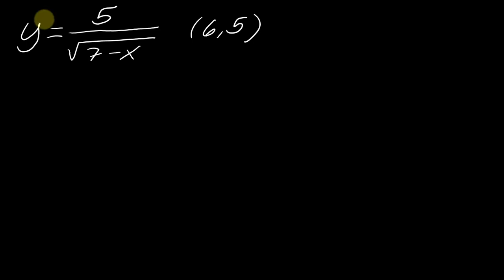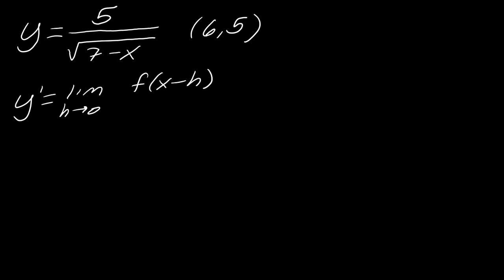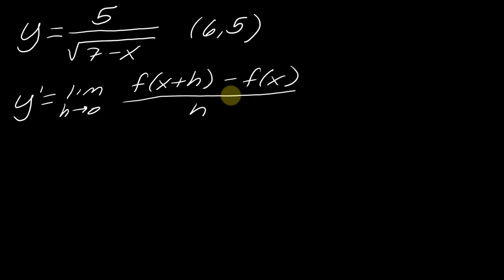So here's the function I'm going to use for this example and here's the point. First things first, we've got to find the derivative. So I'm going to go ahead and just write out the definition of the derivative. So this is f of x plus h — the limit as h approaches 0 of f of x plus h minus f of x, all of that over h. It's always a good idea to write this out first because it makes it very clear you know where you want to start.